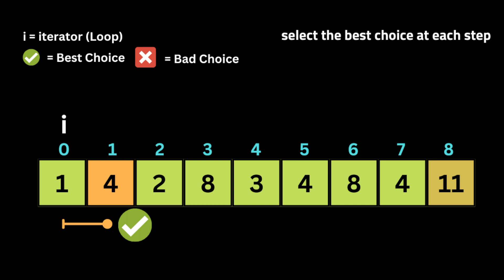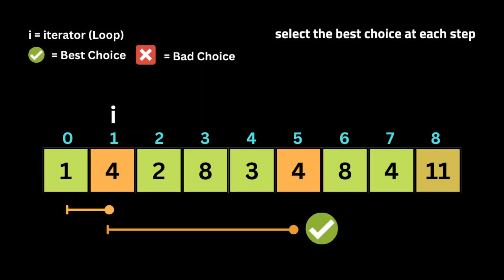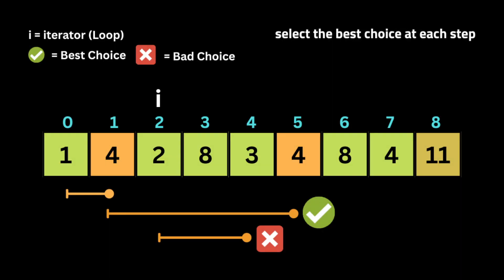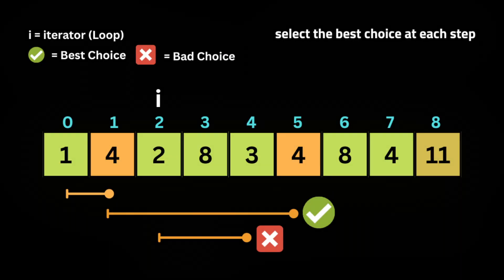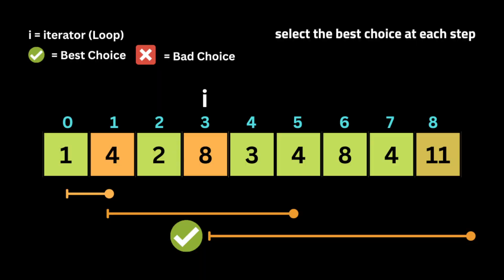We traverse the first element and reach index 1 with element 4. Next, we choose the best choice — the longest number of jumps we have at the moment. At this point, we only have one element, which is 4. So we jump 4 steps to reach index 5 with element 4. We then need to make the best choice again with the hope of reaching the last index.